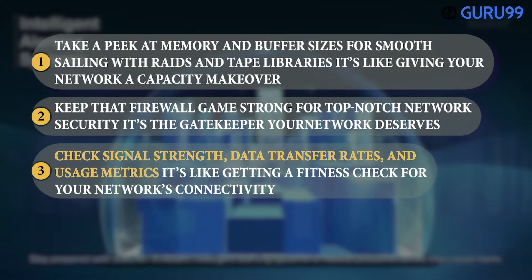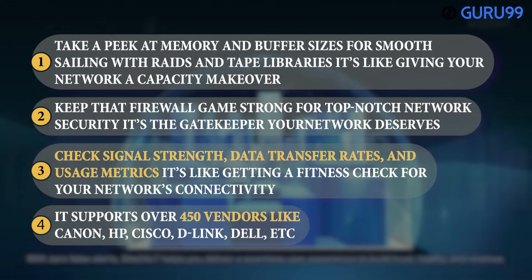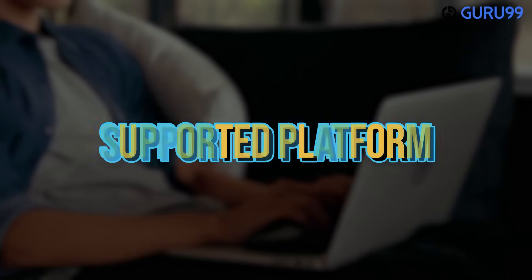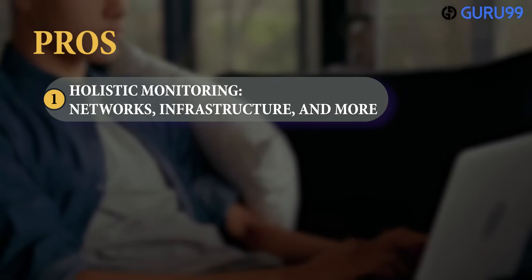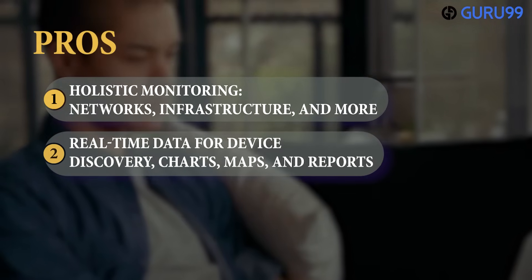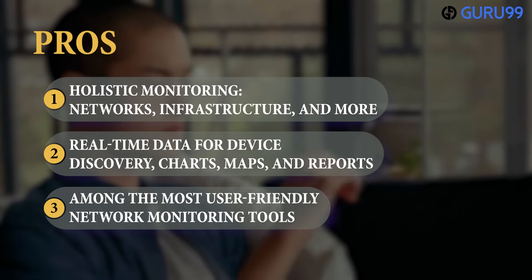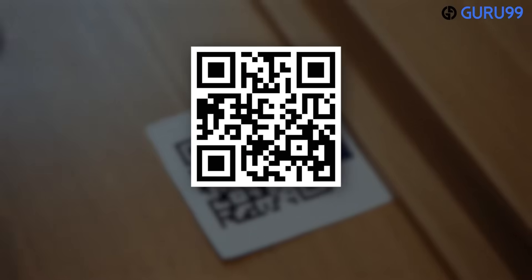Site24x7 supports over 450 vendors like Canon, HP, Cisco, D-Link, Dell, and more. Supported platforms: Windows and Linux. Pros: holistic monitoring of networks, infrastructure, and more; real-time data for device discovery; charts, maps, and reports; among the most user-friendly network monitoring tools. Cons: detailed feature set needs time to master. Price: contact customer support. Free trial: 30 days.